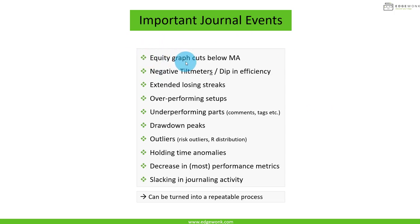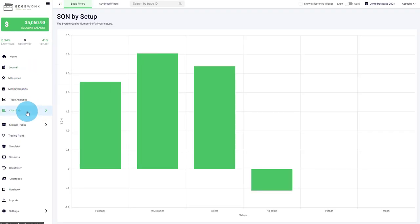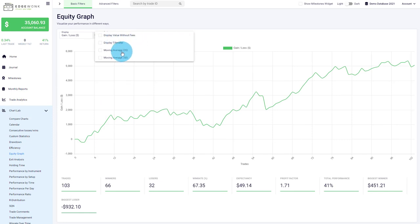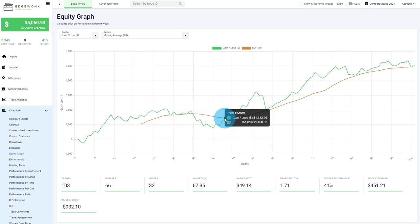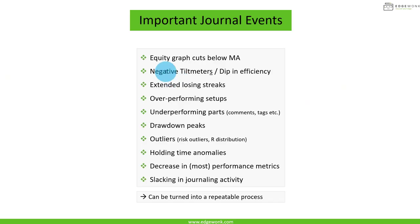First, we can go to our equity graph and look at its relation to the moving average. In Chart Lab under equity graph, under options you can turn on the 20 or 50 period moving average. You generally don't want to see your equity graph dipping below your moving average — this means you've experienced more and more severe losses than in the past. Getting back above the moving average is a good sign. Next, always consult your tilt meter and efficiency to see how your last five to ten trades are behaving in terms of discipline and quality.